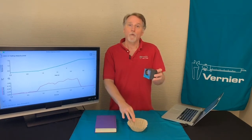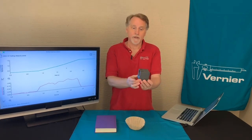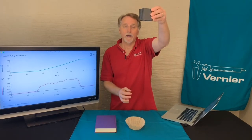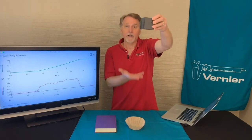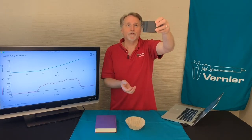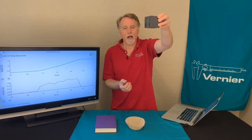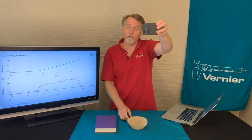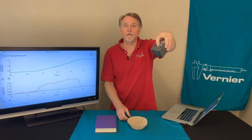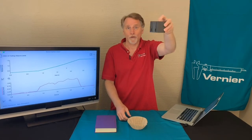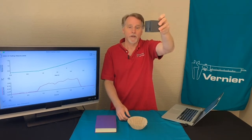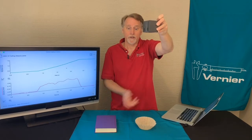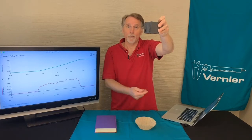The way the data were collected was the motion detector was mounted up high — there isn't enough room on screen to show that — but it was mounted high and the coffee filter was allowed to fall all the way to the floor. That's how the data were collected; they would collect a run with the coffee filter and then hold the book there as well.